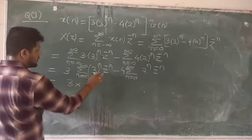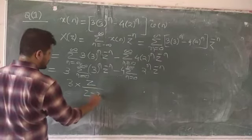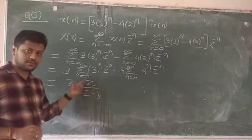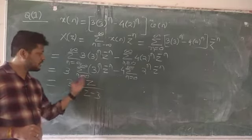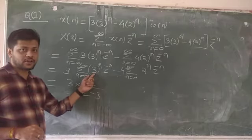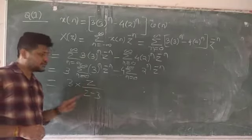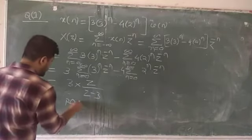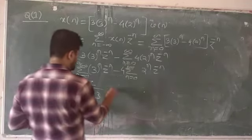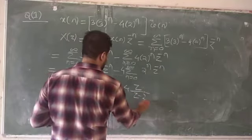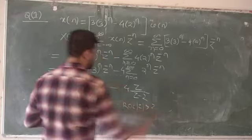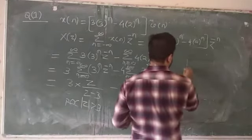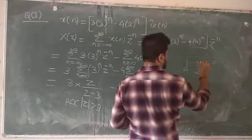Expanding the infinite GP series, and knowing that the Z-transform of a^n·u(n) is z/(z−a), we get 3·z/(z−3). The region of convergence for this term is |z| > 3. The second term gives −4·z/(z−2), with ROC |z| > 2.